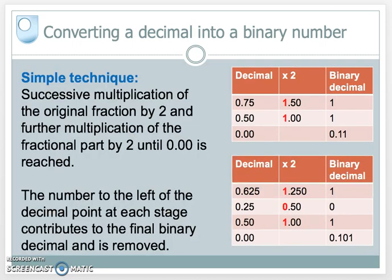Let's have a look at a very simple technique. This is not covered in the module materials, but I think it's a very simple technique to convert a decimal fraction into a binary decimal number. We take the fraction and keep multiplying it by 2, and keep taking the fractional part of the number we get, and keep multiplying that by 2 until we end up with zero. As we're multiplying by 2, the number to the left of the decimal point at each stage contributes to the final binary number.